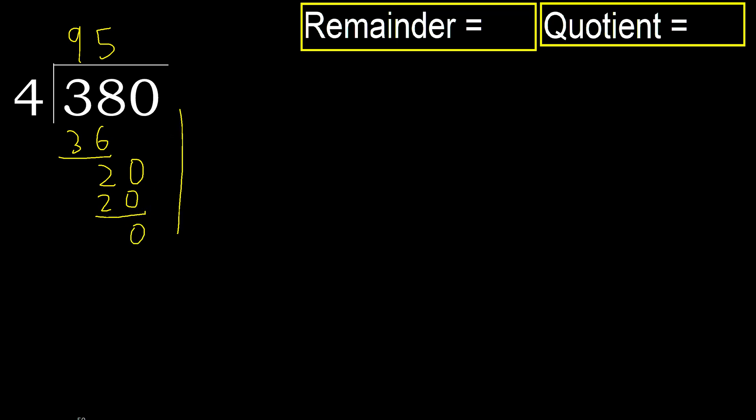Next — that is not numbered, therefore finish. 380 divided by 4 is 95.